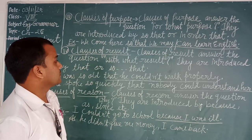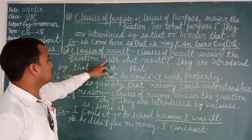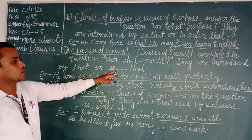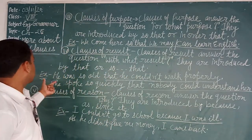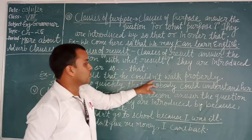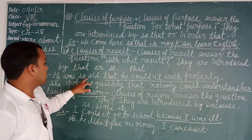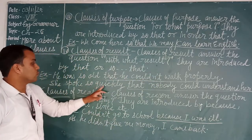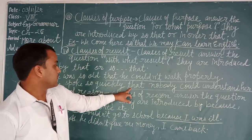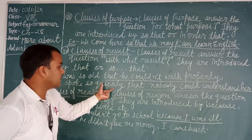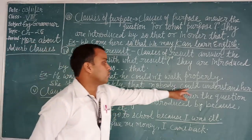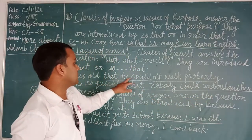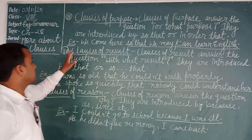Next is clauses of result. A clause of result answers the question 'with what result.' They are introduced by 'that' or 'so...that.' For example: 'He was so old that he could not walk properly.' Another example: 'She spoke so quickly that nobody could understand.' These show clauses of result.